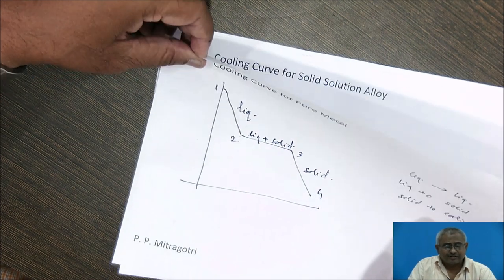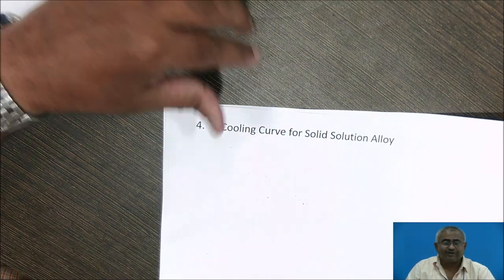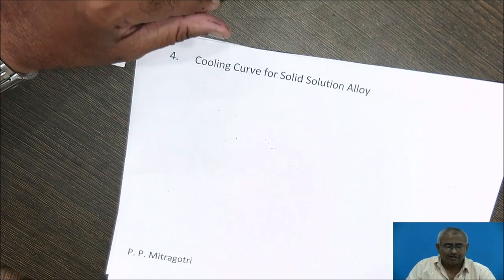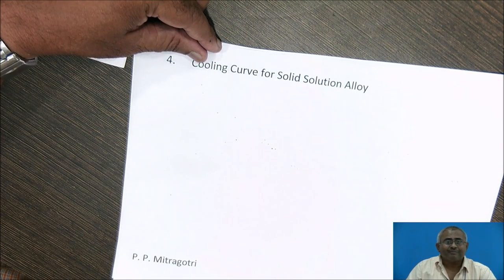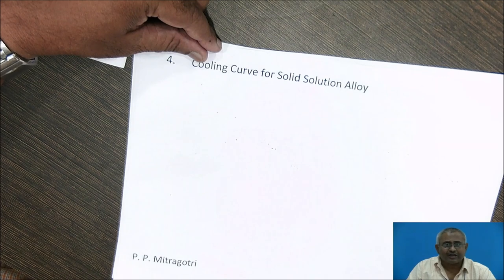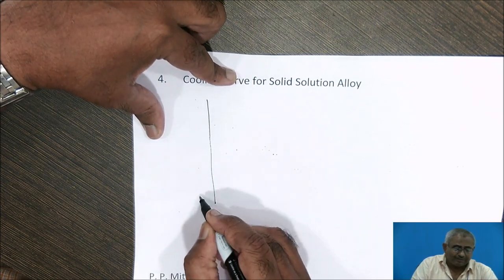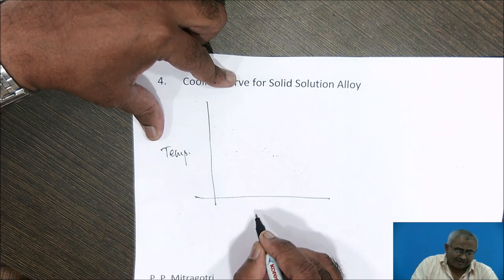The next cooling curve we will discuss is the cooling curve for a solid solution alloy. This cooling curve differs from that of pure metal because pure metals have a fixed melting point and freezing point, while solid solution alloys freeze over a range of temperature. So their cooling curve will appear slightly different from that of a pure metal.